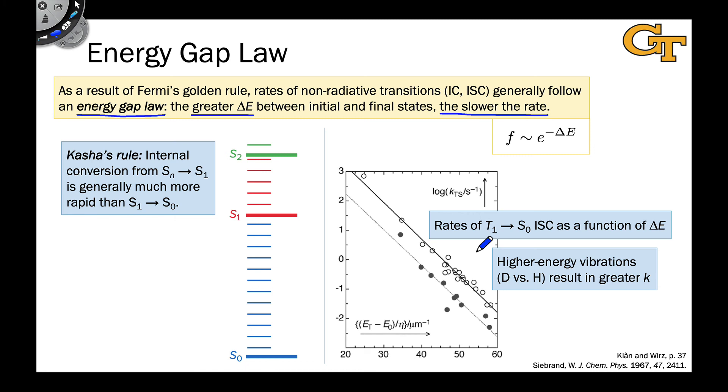And as such, the Franck-Condon factors are better for the deuterated compounds than they are for the hydrogenated compounds. The Siebrand paper has more detail on this, but it's an excellent demonstration of the energy gap law and Fermi's golden rule, in the sense that the Franck-Condon factors are responsible for this difference in the rate constants of the deuterated and hydrogenated compounds.